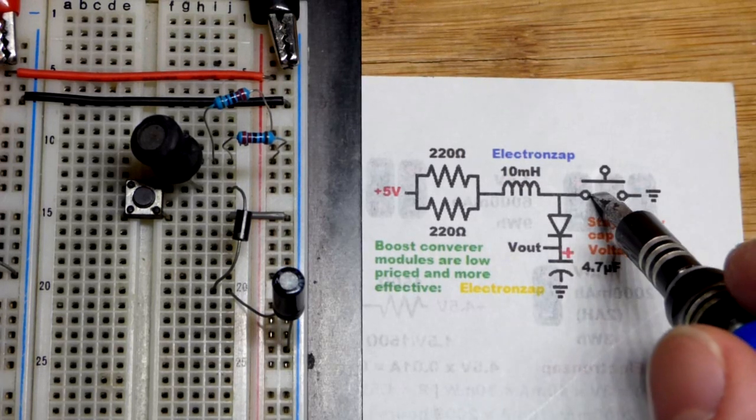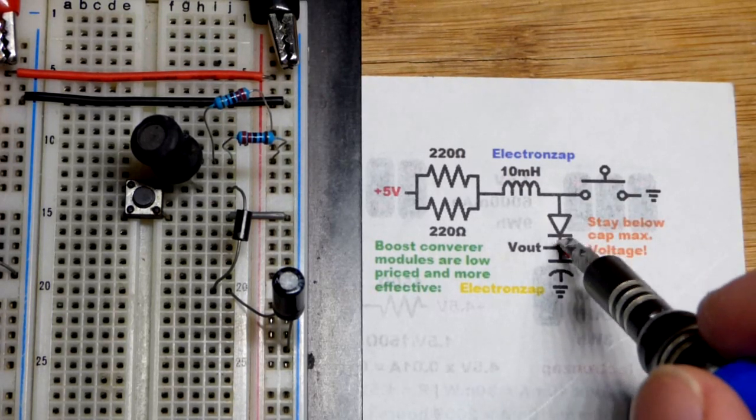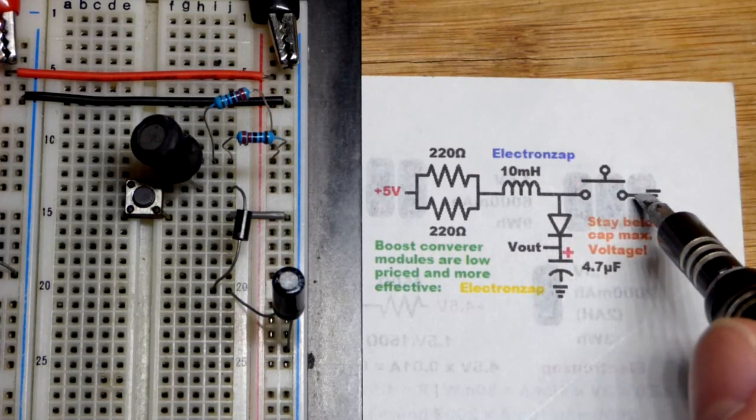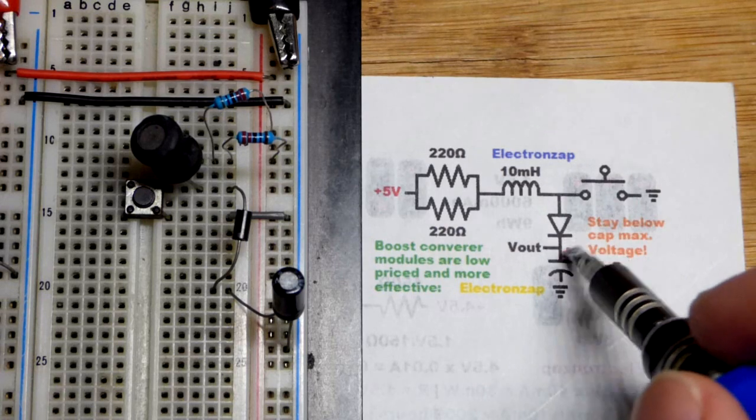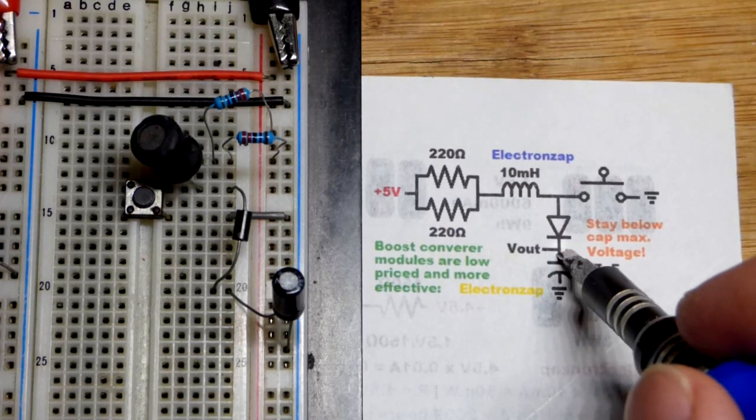When we close the switch, nothing will happen with the capacitor because the diode is reverse biased at that point. You can see ground there, so no current is going to flow through. Whatever voltage is there, it's trapped.